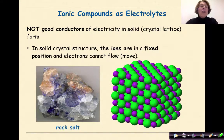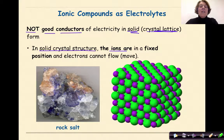Ionic compounds are not good conductors of electricity in the solid form, where they represent a crystal lattice. Because remember, in the solid crystal structure, the ions are in a fixed position and electrons cannot flow. In other words, electrons cannot move. If they can't move, they can't conduct electricity.